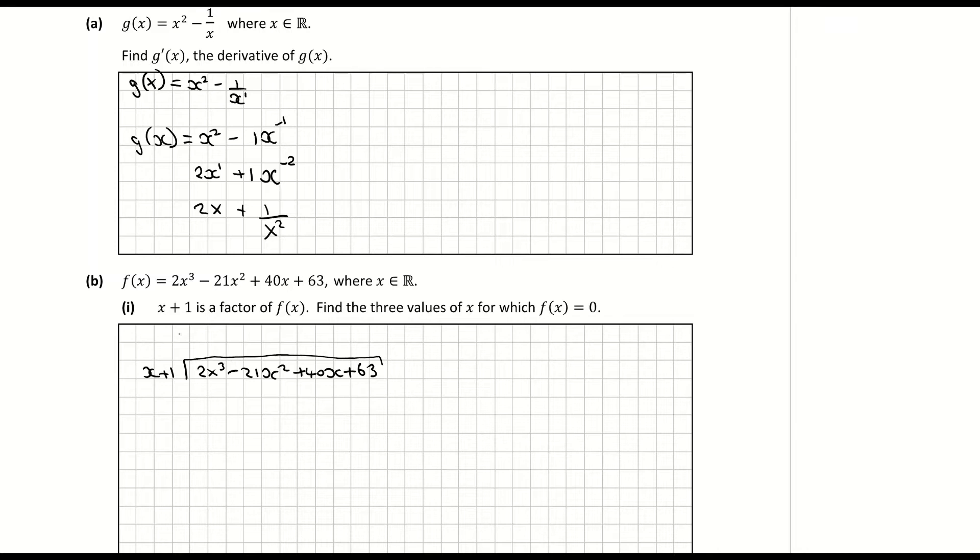x into 2x cubed becomes 2x squared. Multiply that back down gives me 2x cubed, changing the signs here. So 2x cubed minus 2x cubed will cancel and minus 21x squared minus 2x squared will give me negative 23x squared. I'm then bringing down my 40x so that's a positive 40x and I go again.